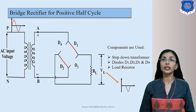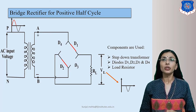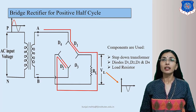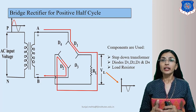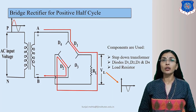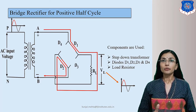Now let's trace the current direction during the positive half cycle. Current flows from A to B, that is from the positive terminal to the negative terminal. The current path is: A → D1 → RL → D2 → B. Thus we get the output voltage across RL as a positive half cycle, because current flows through RL from top to bottom in the clockwise direction.